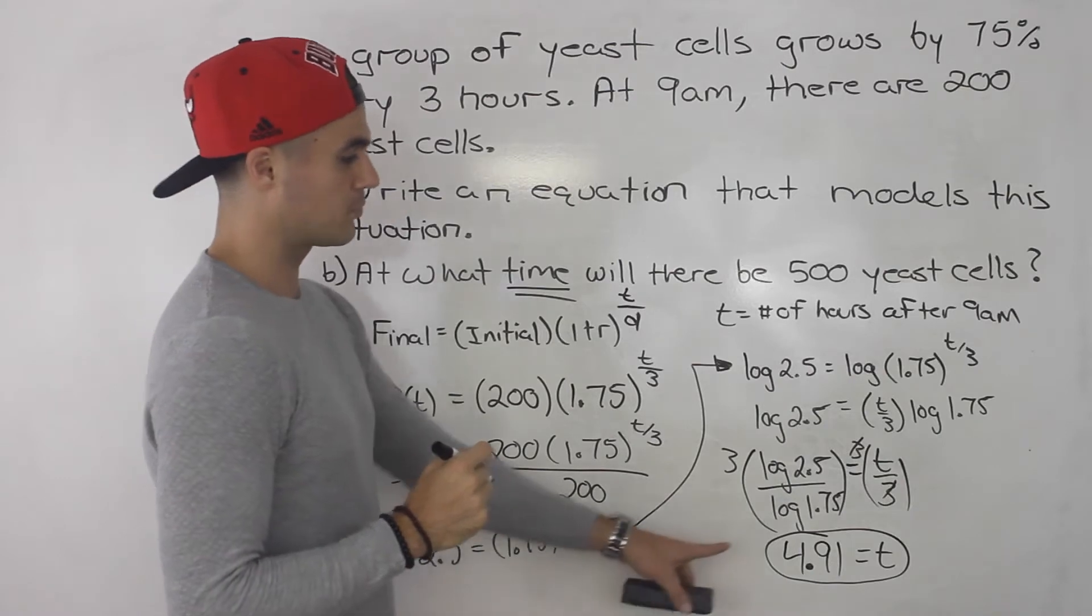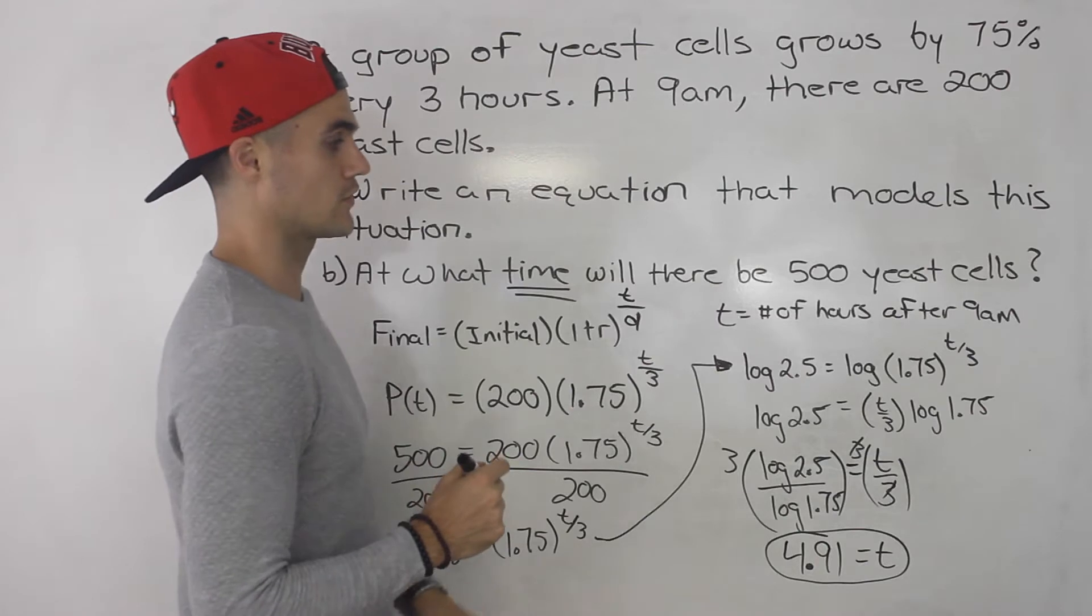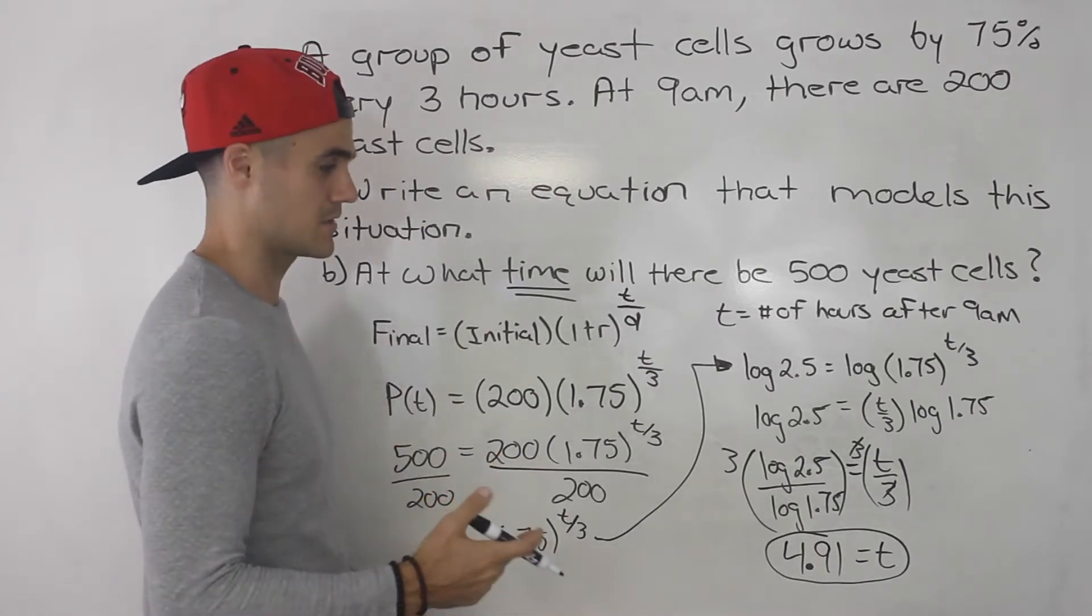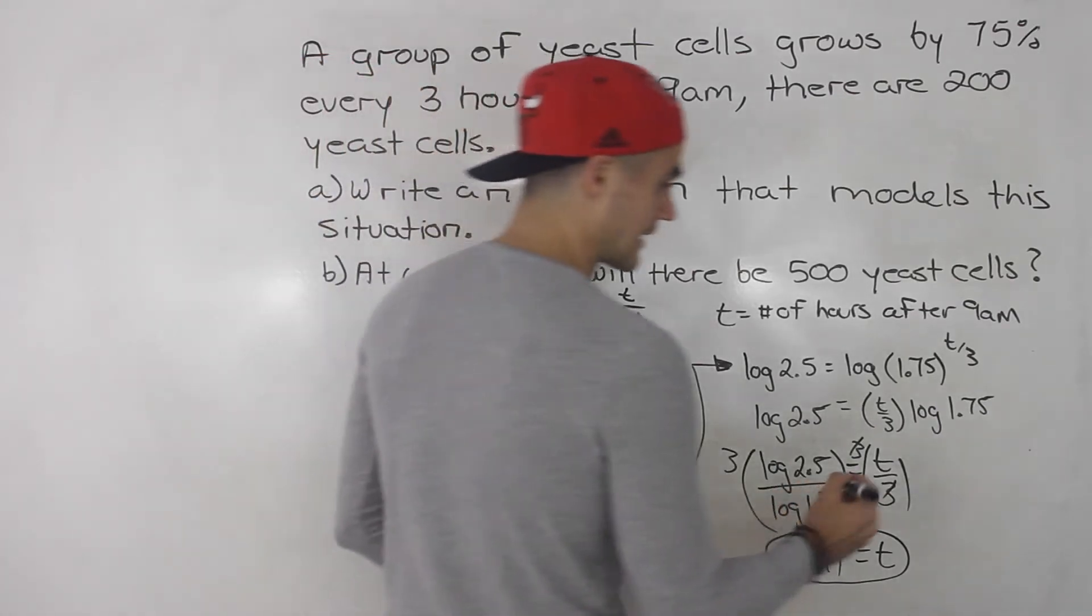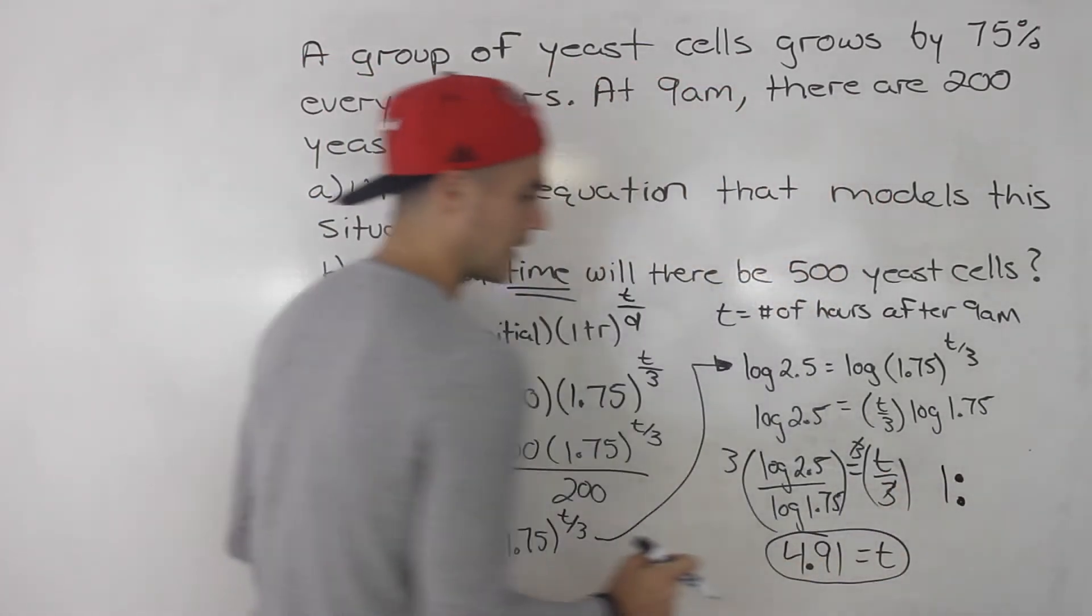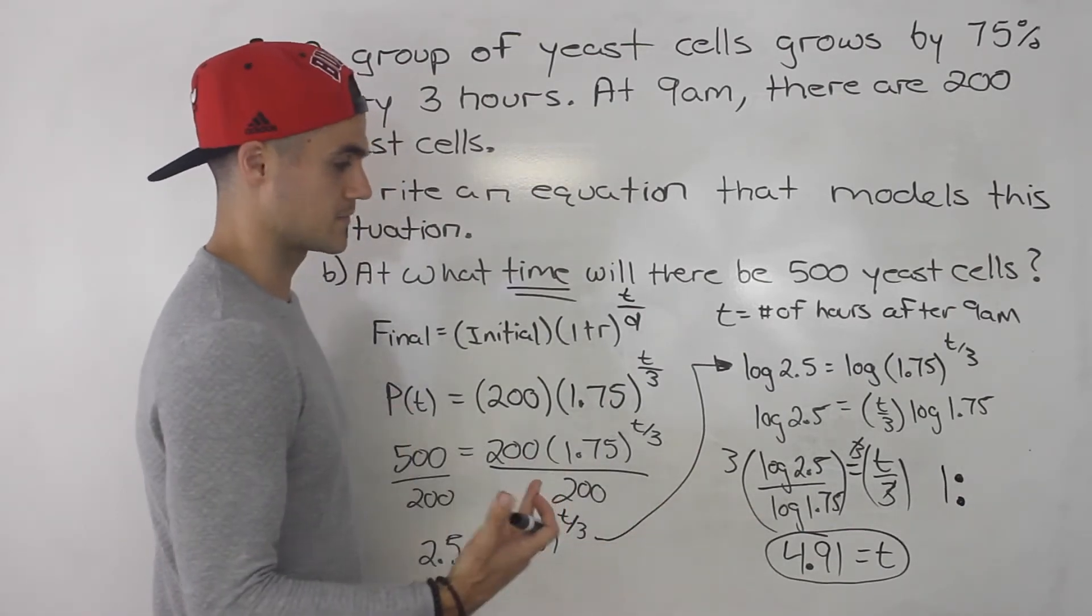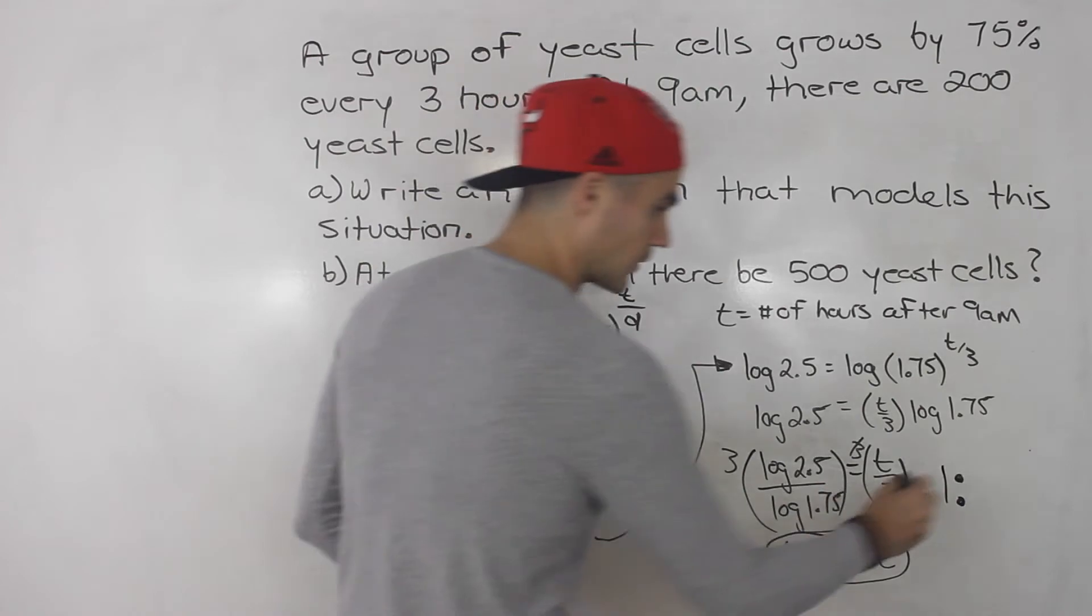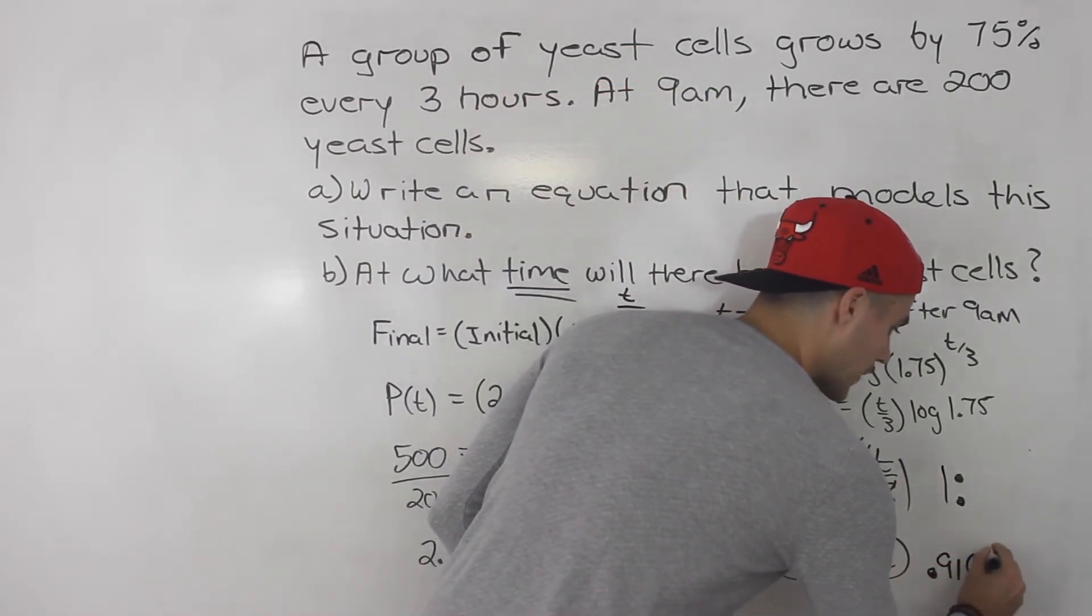So 4.91 hours after 9 a.m., that's when there's going to be 500 yeast cells. What time is that? Well 4 hours after 9 a.m. is 1 p.m. What about this 0.91? We have to convert to minutes. So 0.91 of an hour, to get the minutes you take 0.91 and multiply it by 60 minutes in an hour.